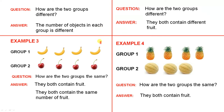The next example: Group 1 has 4 bananas, Group 2 has 4 cherries. The question could be: how are the two groups the same? They'll quickly see they both contain fruit and they both contain the same number of fruit — there's 4 here and 4 here. How are the two groups different? They both contain different fruit, so the fruit is not the same.